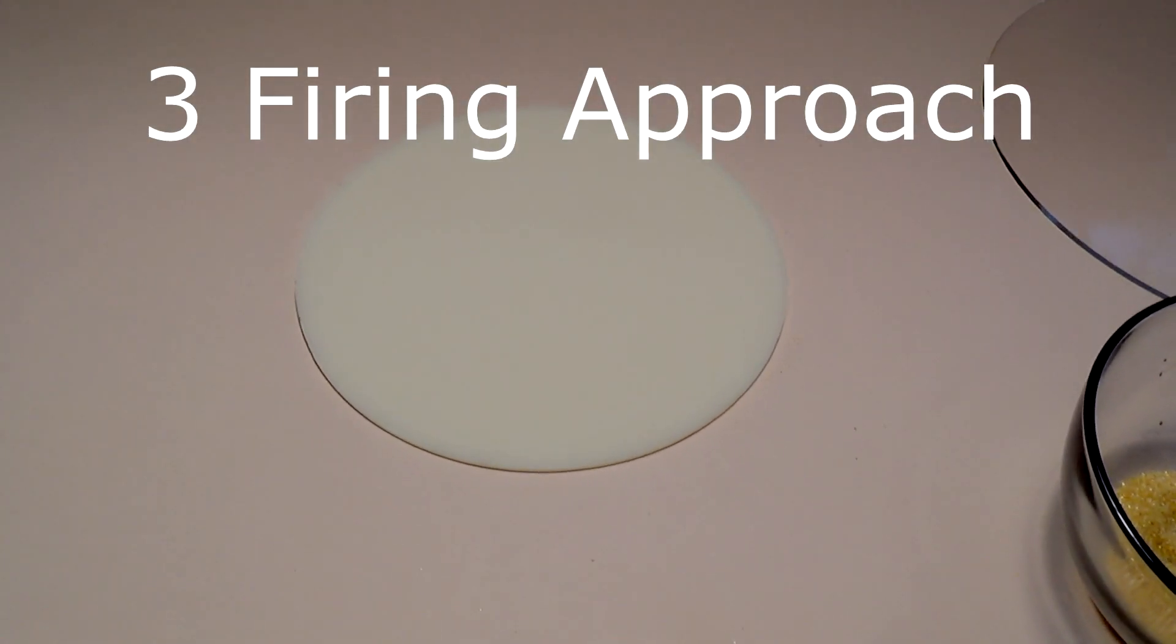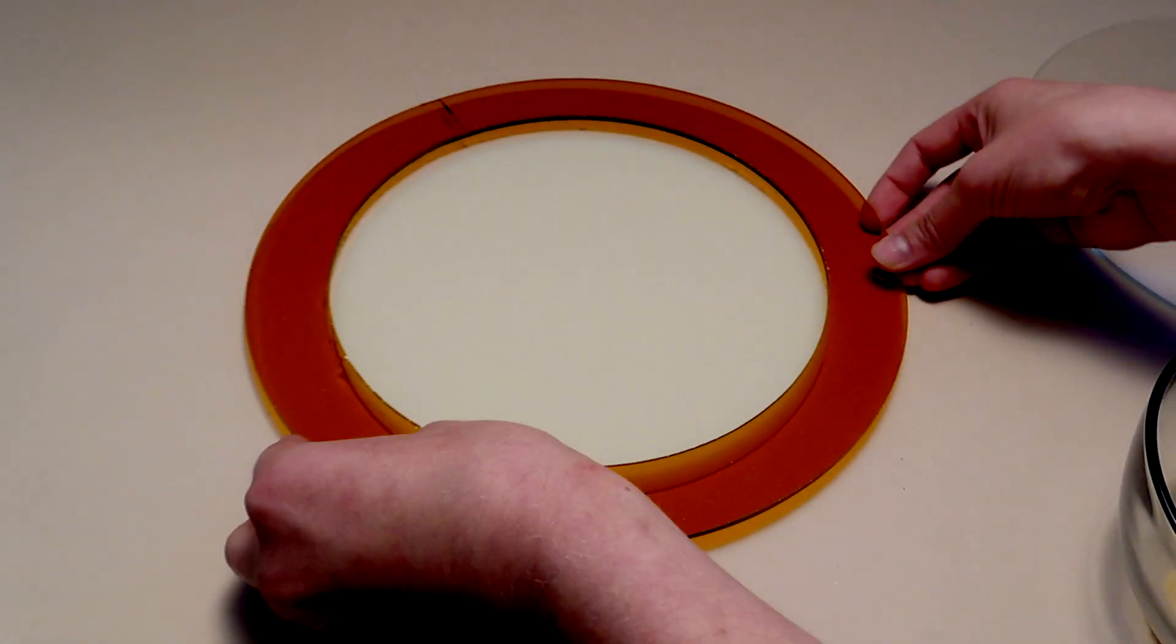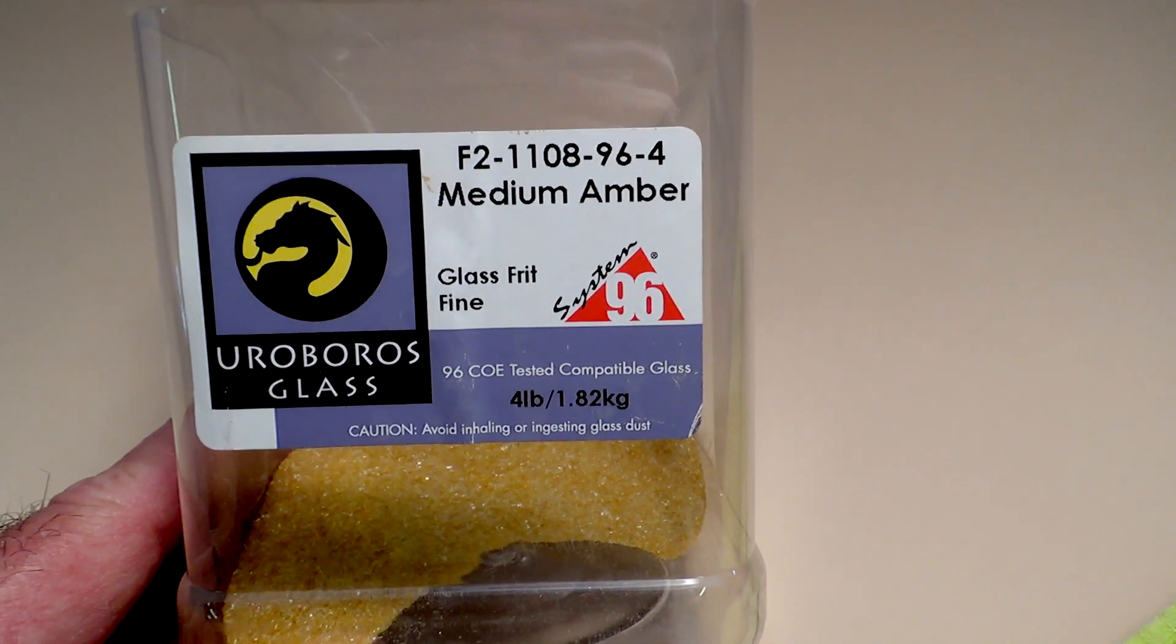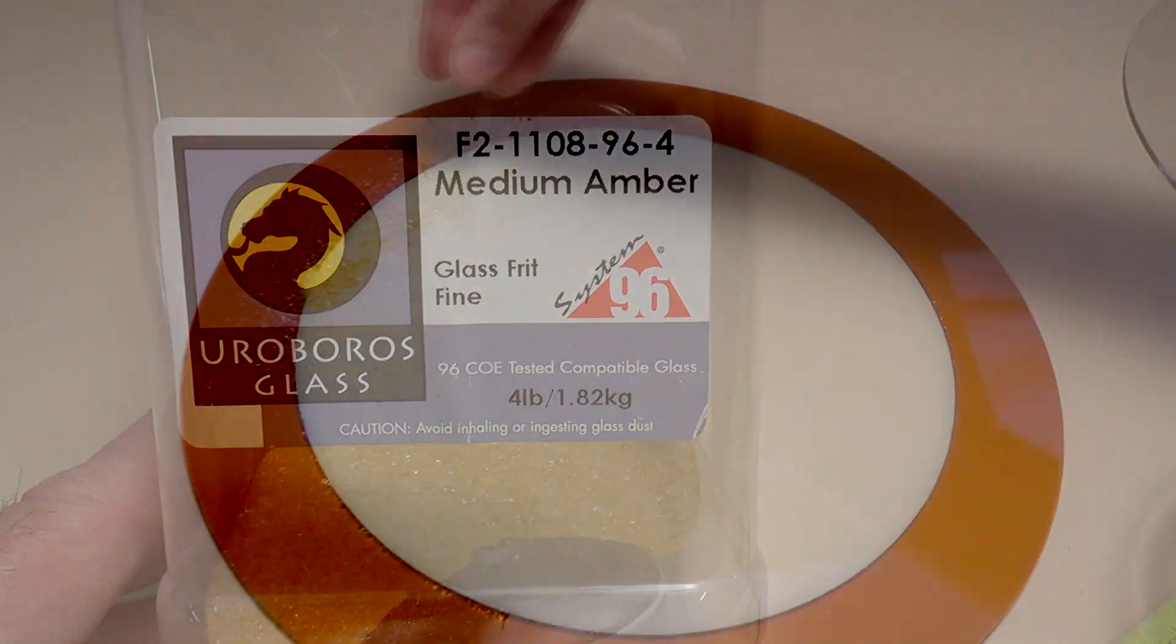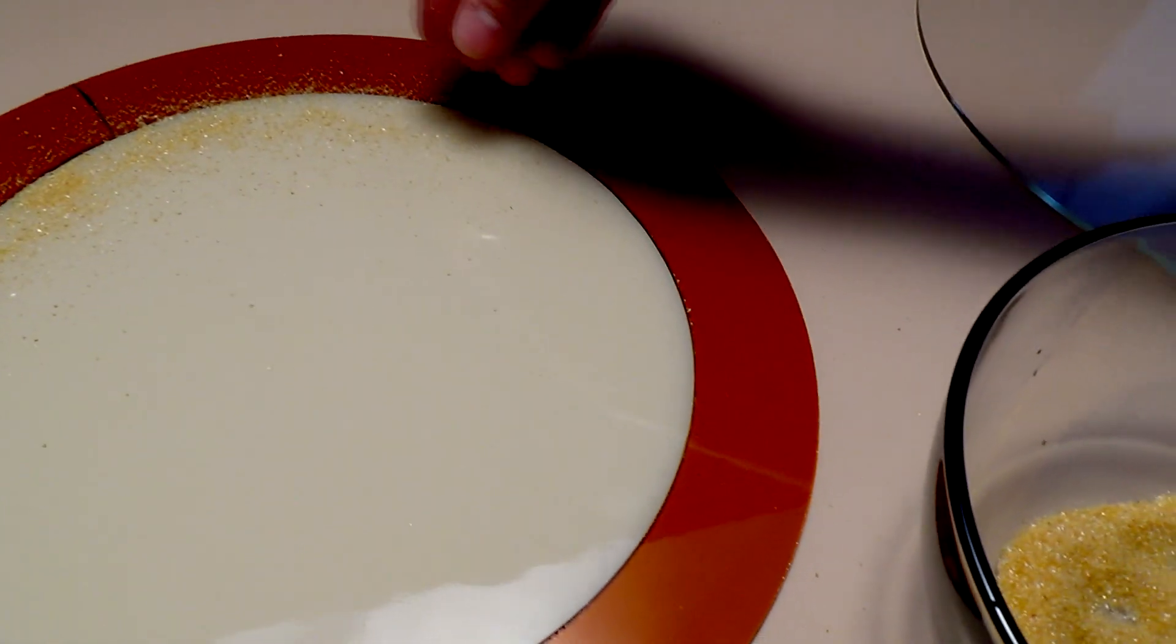For the first firing, I start with the center section and an outer ring as my base layer. I'm using System 96 Fine Frit to support the upper layer. A light dusting around the outer edge will greatly minimize the amount of air bubbles being trapped between the layers.